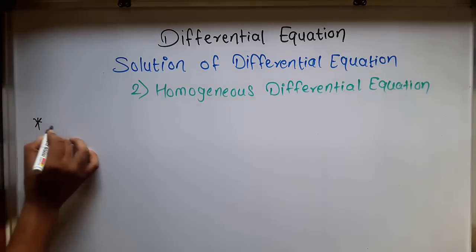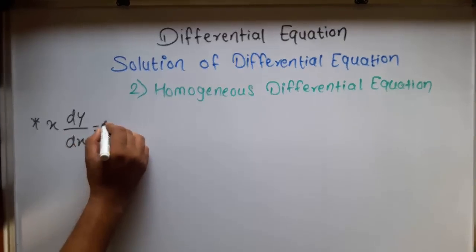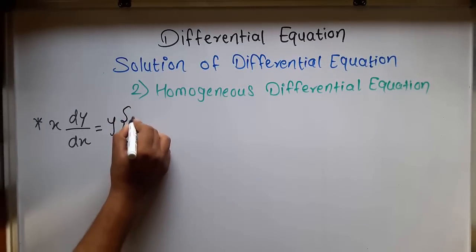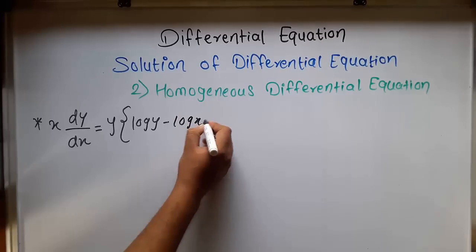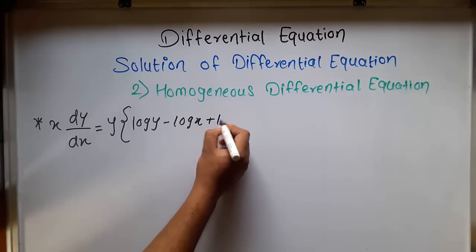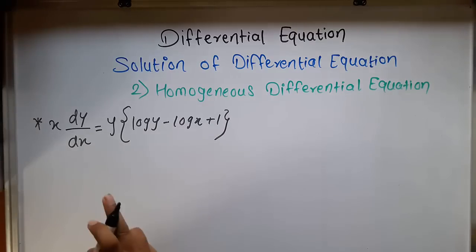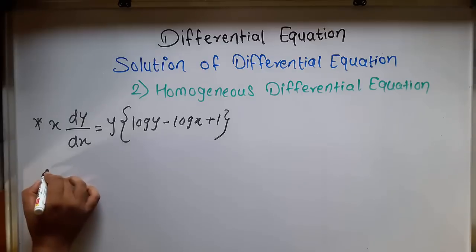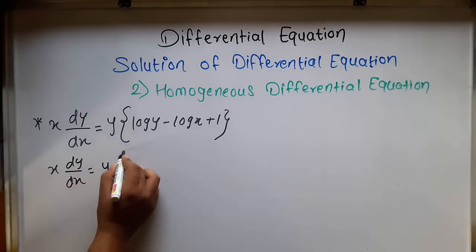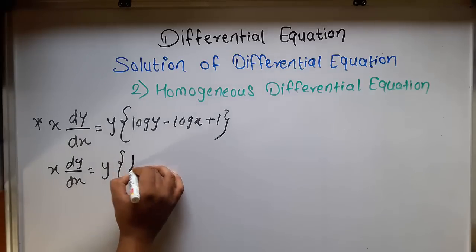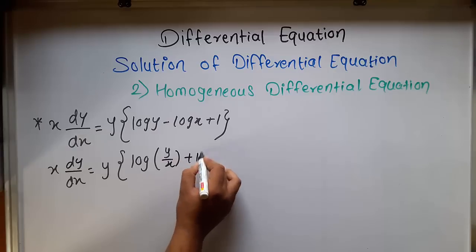The first example: x dy/dx equal to y times (log y minus log x plus 1). When we have log a minus log b, it equals log(a/b). So we rewrite it as x dy/dx equal to y times (log(y/x) plus 1).